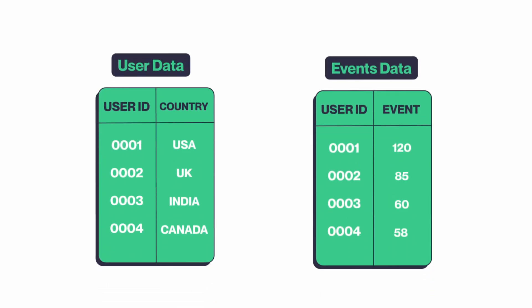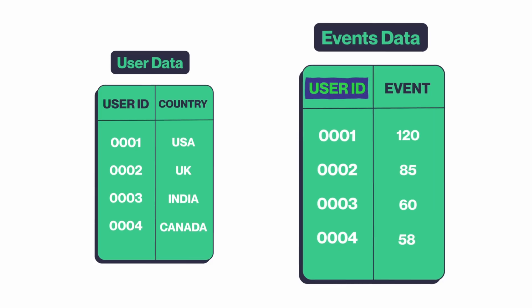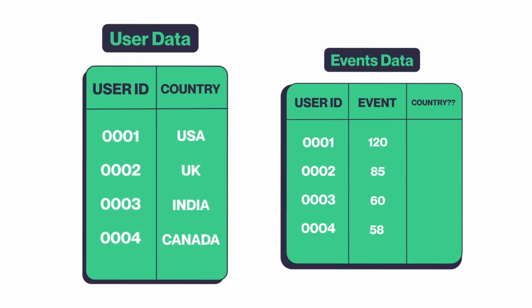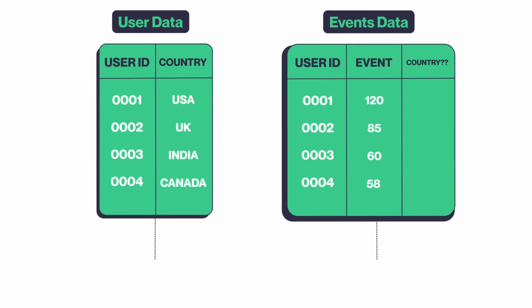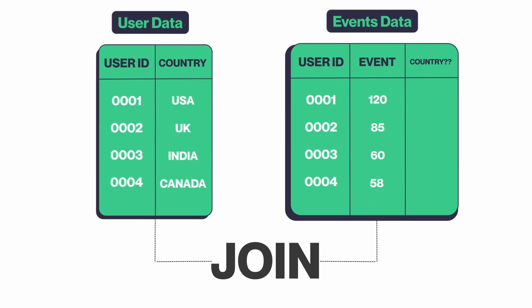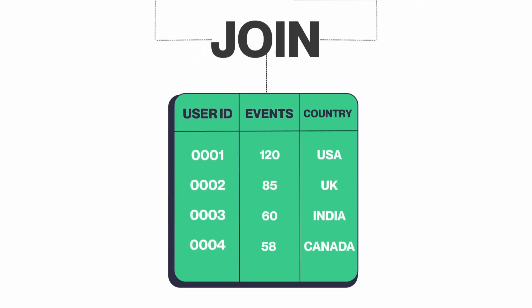Another key operation is join. Sometimes you need to take two different data tables and merge them together using a join key, like a user ID. For example, the event data might have a user ID but not a country. So if we want to know the number of events by country, we join the user data — which has the user's country — with the event data that has the user and the event. Then you join those together and aggregate. Join is the other most important keyword in SQL for creating powerful datasets.